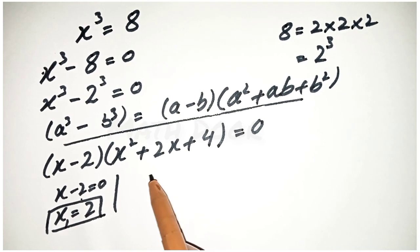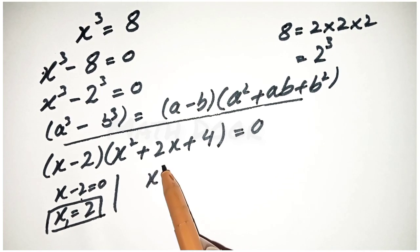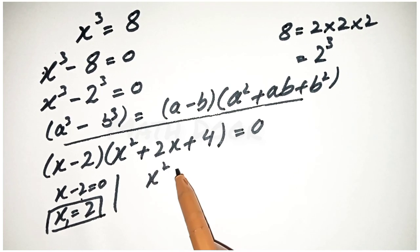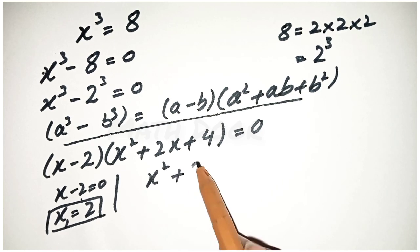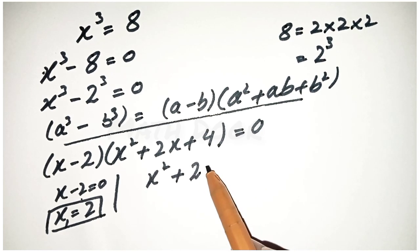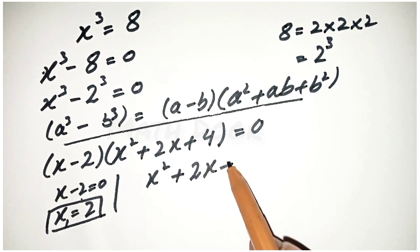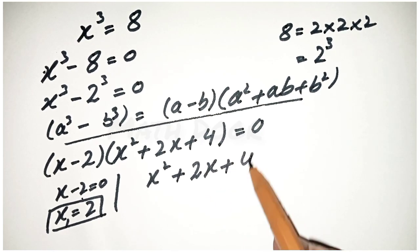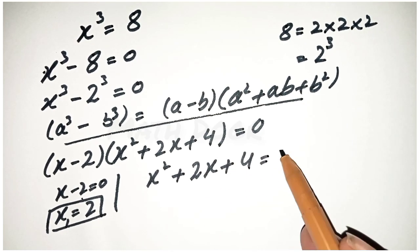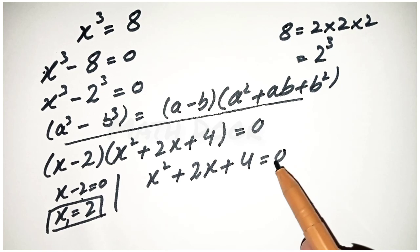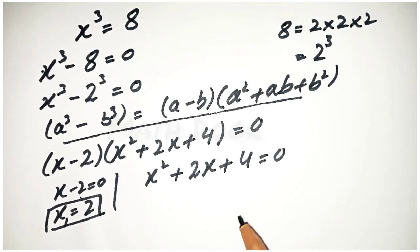Now we solve the second factor: x square plus 2x plus 4 is also equal to 0.